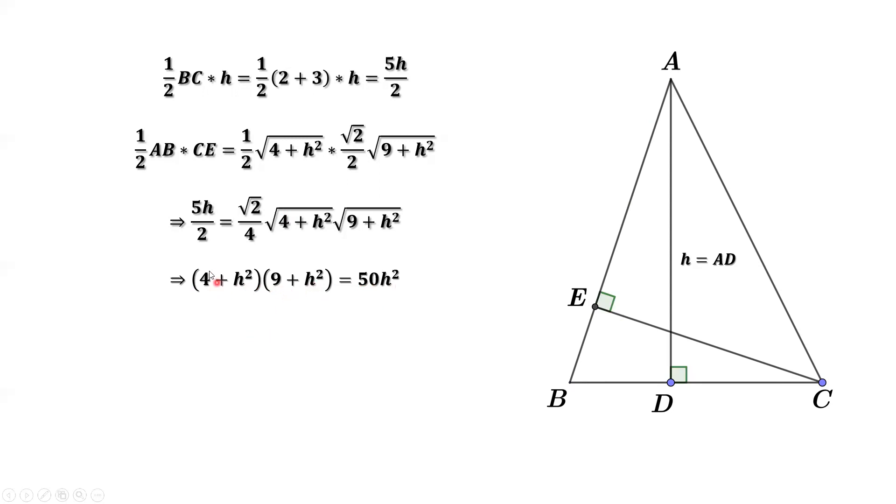Continue to simplify. The left-hand side and move the right-hand side to the left-hand side. Simplify again. We have H to the power of 4 minus 37H square plus 36 equals 0.